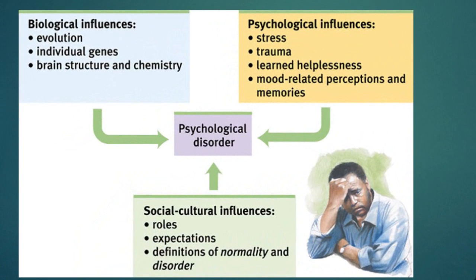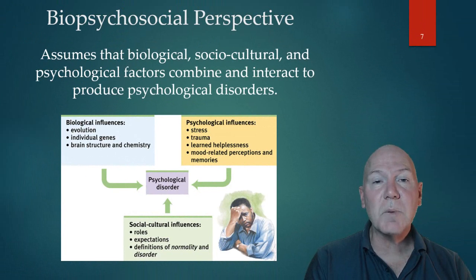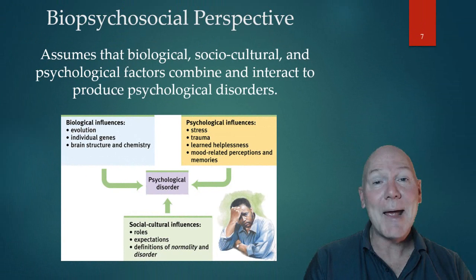The biopsychosocial perspective understands that, but it also looks at how we're a product of our biology and genetics. We have psychological influences, including stress and trauma, learned helplessness, and mood-related perceptions and memories. Our society also plays a role — cultural influences, the roles in our culture, our expectations, and what we define as normal and not normal. When we look at it from a psychological perspective, we can look at explanations that go kind of beyond a medical model, though we do still treat it similarly.